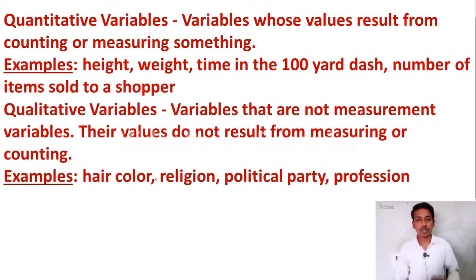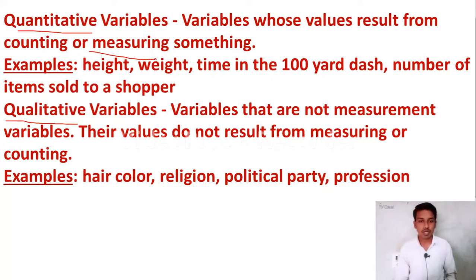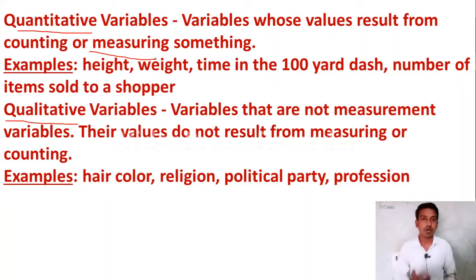There are two types of variables. One is quantitative variable and another is qualitative variable. Quantitative variables are those which we can count or measure. For example: height, weight, time, number of items shown to a shopper, how many students are in your class, how many boys, how many girls — these are all quantitative variables where we can count in numbers.